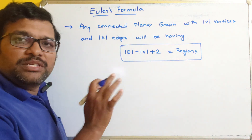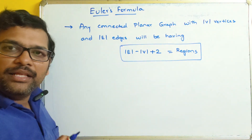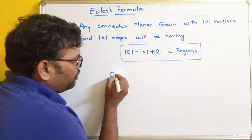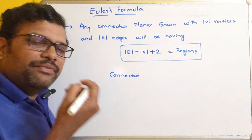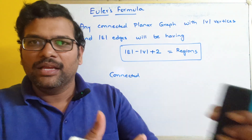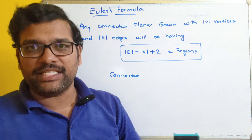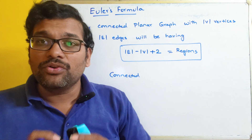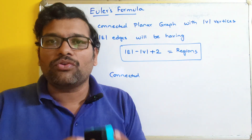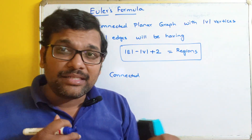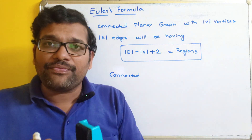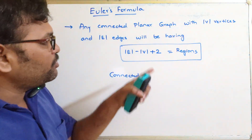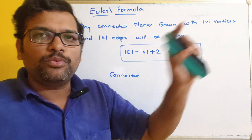The connected planar graph condition is the most important point. For applying Euler's formula, the graph should be connected and planar. A connected graph means every vertex should be associated with some other vertex by an edge. A planar graph means the graph should be drawn without any edge crossings — there should be no intersection of edges. If there are edge crossings, we must first convert it to a planar graph.